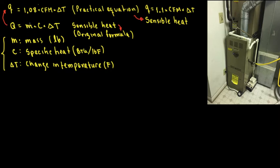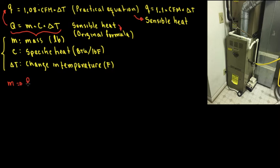This is extra knowledge — where the equation comes from. We're going to work on Q = M × C × ΔT. We need to think about which fluid we're talking about. Is it water? Is it air? In this case, the fluid is air. I'm going to use a diagram to illustrate.